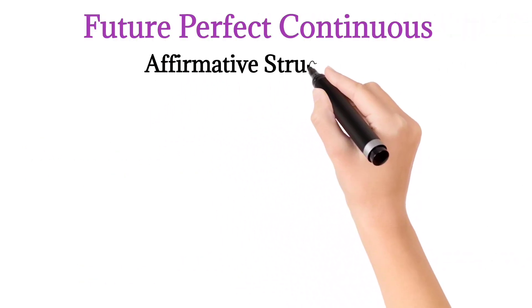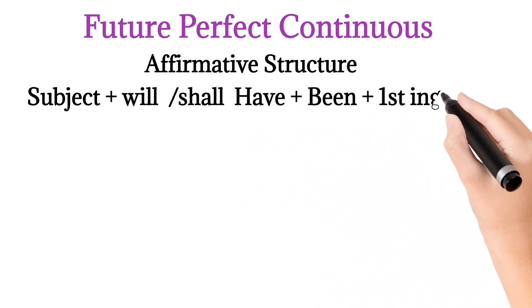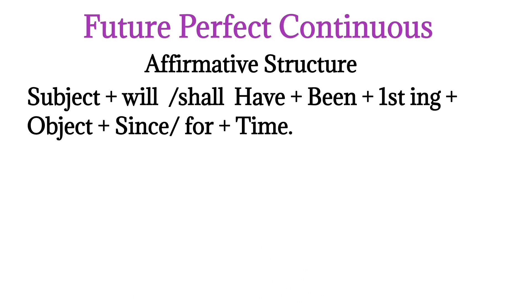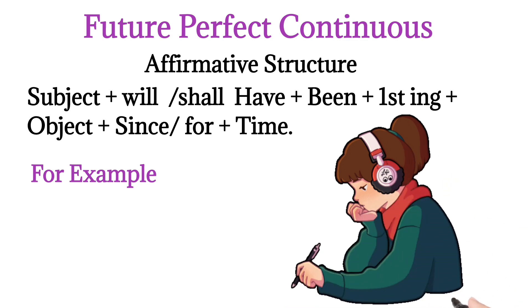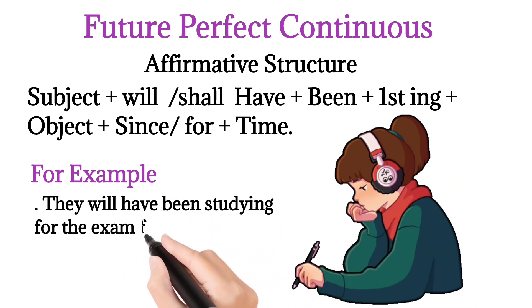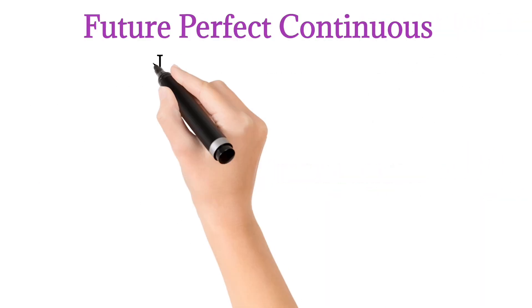Affirmative structure: Subject plus will have been plus verb plus -ing, object plus since or for and time. Example: They will have been studying for the exam for 6 months by the end of the semester.